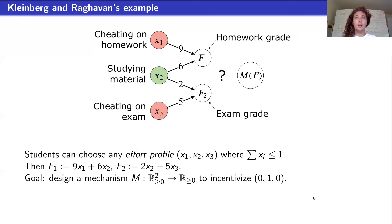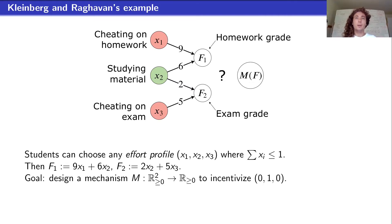What should the professor do? For either the homework grade or the exam grade alone, cheating yields a higher marginal benefit than studying the material, so grading based on just one feature won't work — the student will want to cheat. They have to combine both features, because studying helps both. If you weight them equally, cheating on the homework has marginal benefit nine towards the final grade, whereas studying has marginal benefit six plus two, which is eight. So that still doesn't work.